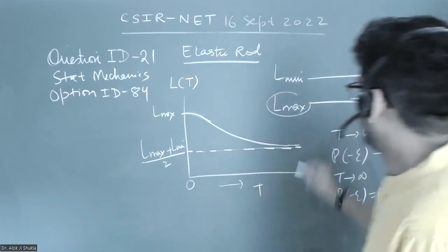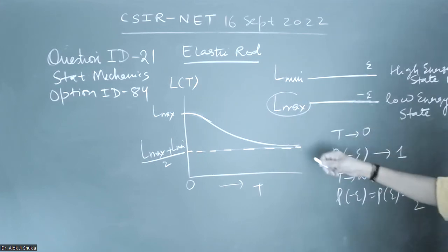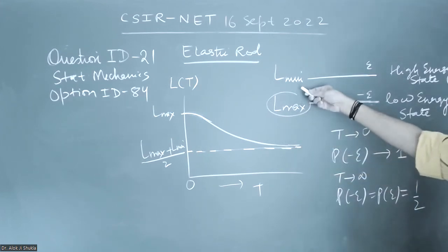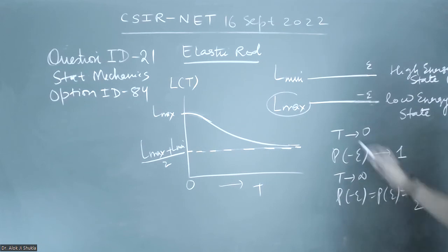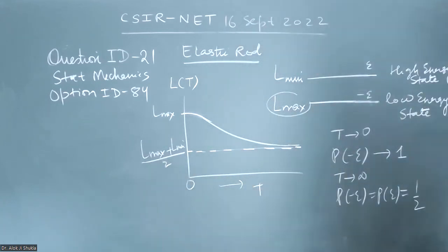And when the temperature is very high, because probability is half, it will be just taking the average value: P1 times L minimum plus P2 times L maximum. That means half L minimum plus half L max, so it will become L max plus L min by 2. So they have related the elastic rod equilibrium length to energies.